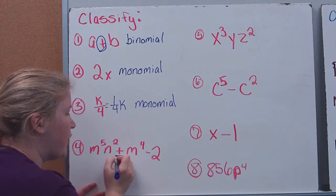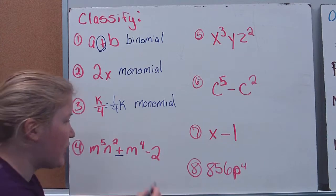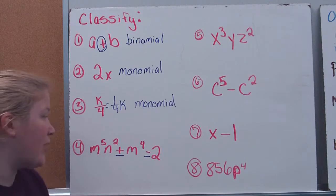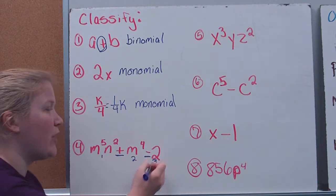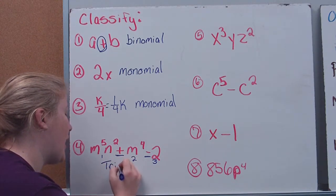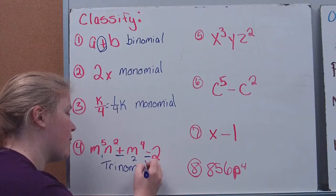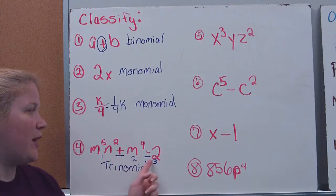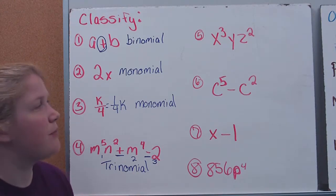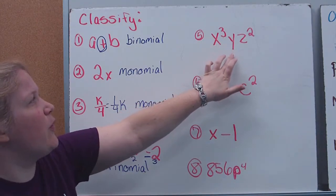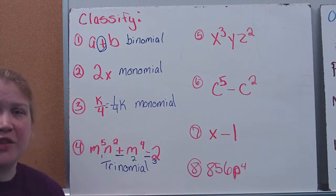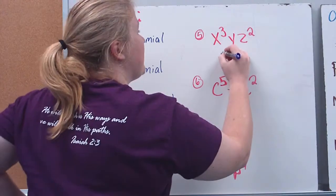Down here, what I always want to look for: do I have addition or subtraction signs? I have an addition sign and a subtraction sign. Those are separating my terms, so that means I have 1, 2, 3 terms. If it has 3 terms, we call it a trinomial. And here, x cubed, y, z to the second — that is one term. They're all being multiplied; there's no addition or subtraction sign. This is a monomial.